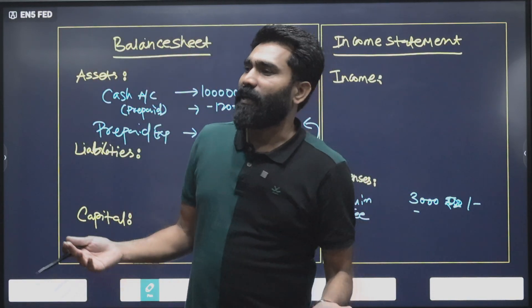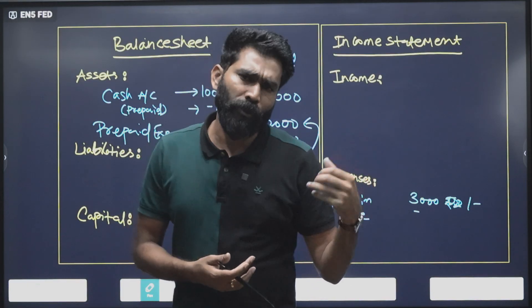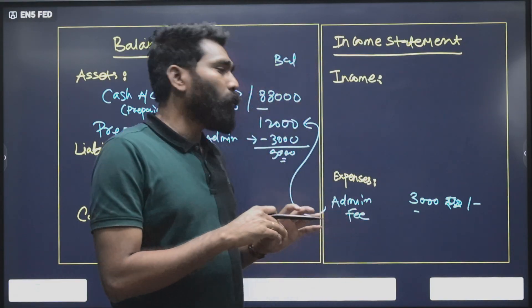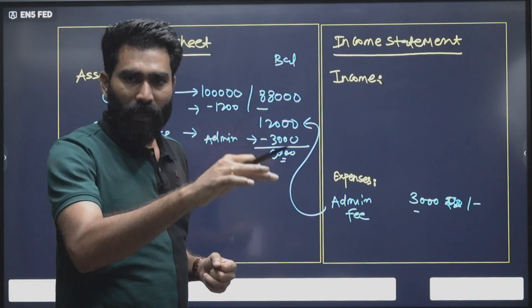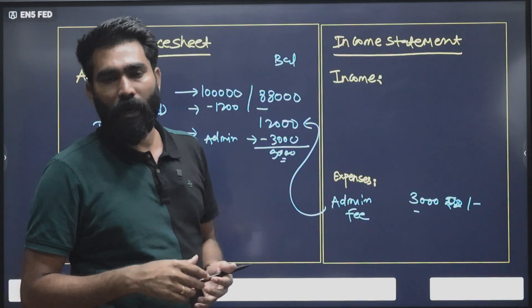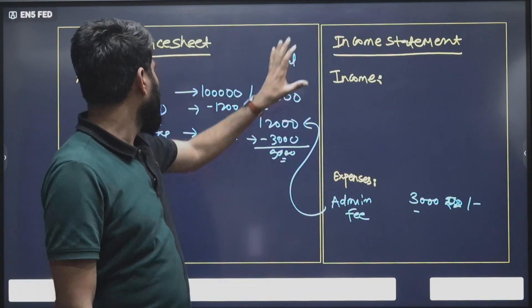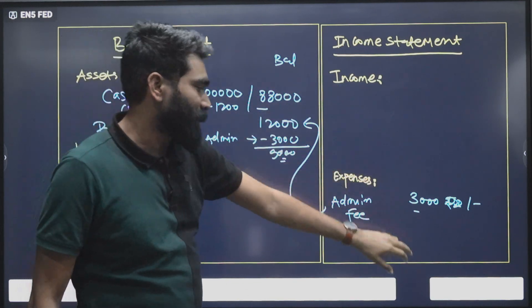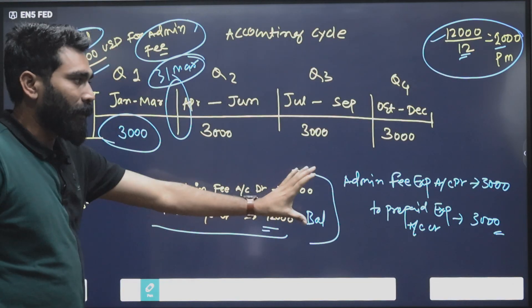In an Apex interview, what I've seen is back-to-back questions on journal entries, and most people make mistakes on prepaid and accrual parts. Don't get confused in prepaid accounting entries or accrual accounting entries. Maybe next episode I'll record on accrual accounting.